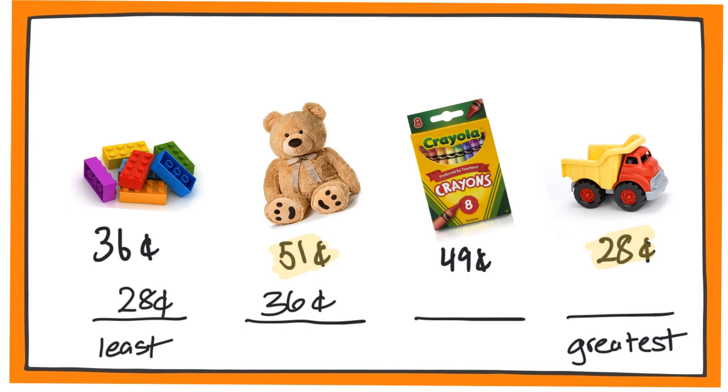The third smallest number would be the crayons for 49 cents. And the greatest number would be 51 cents, which is the cost of the teddy bear. And so there, we've arranged the numbers from least to greatest.